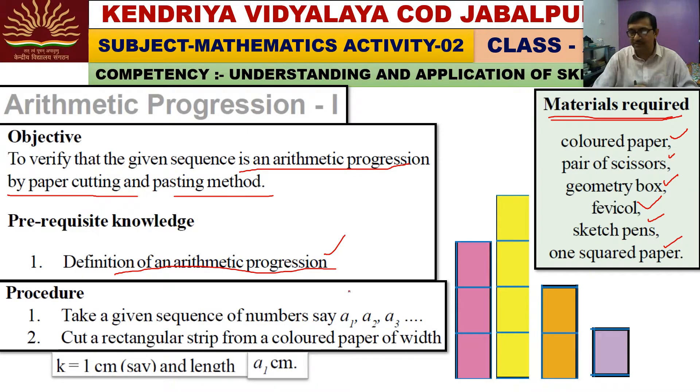Let's discuss the procedure. Number 1: Take a given sequence of numbers, say a1, a2, a3. Second point is cut a rectangular strip from a colored paper of width constant k = 1 cm and length a1 cm.